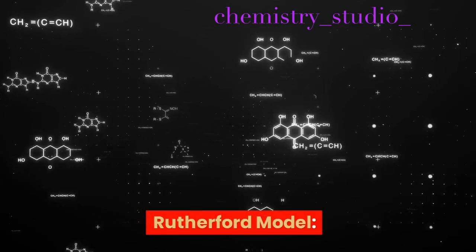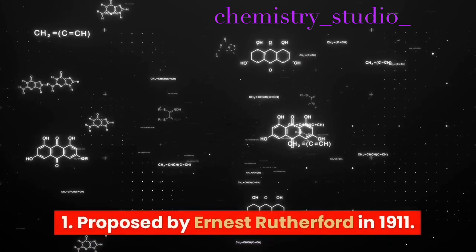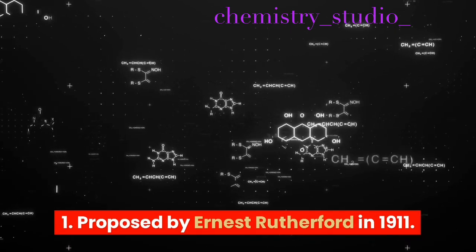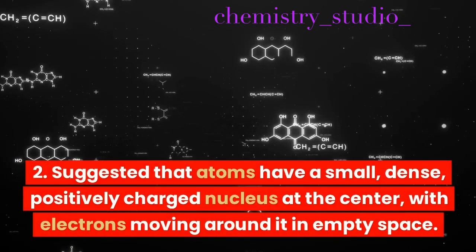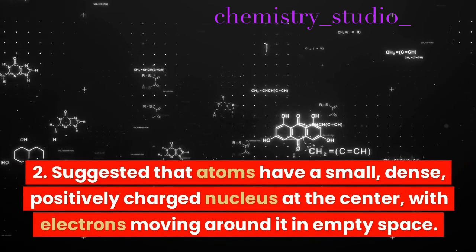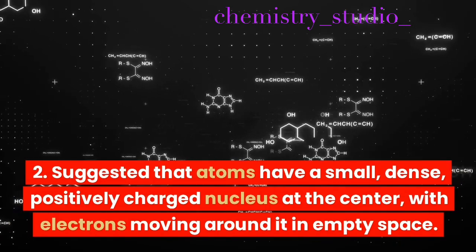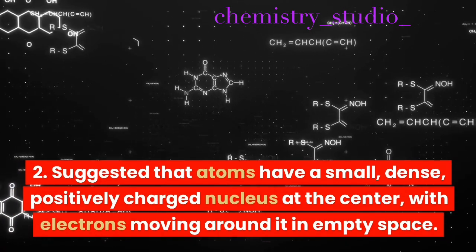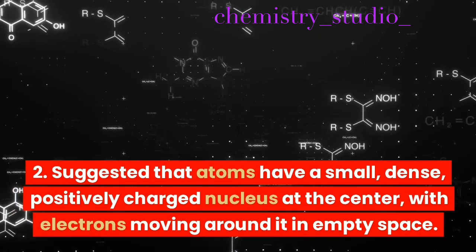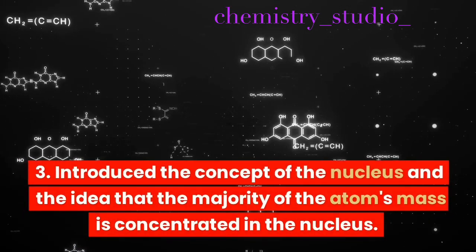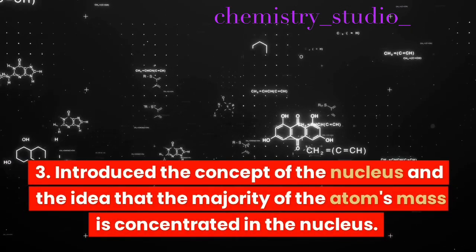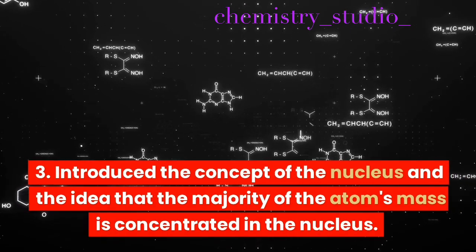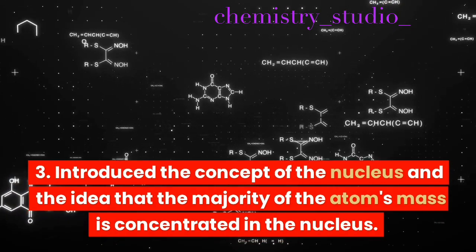Rutherford model. Proposed by Ernest Rutherford in 1911. Suggested that atoms have a small, dense, positively charged nucleus at the center, with electrons moving around it in empty space. Introduced the concept of the nucleus and the idea that the majority of the atom's mass is concentrated in the nucleus.